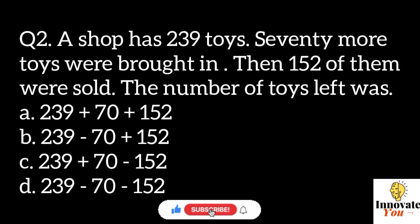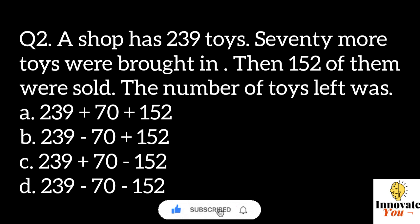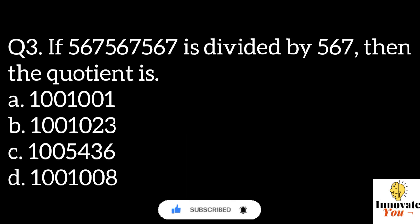Question 2. A shop has 239 toys. 70 more toys were brought in, then 152 of them were sold. The number of toys left was: A. 239 plus 70 plus 152. B. 239 minus 70 plus 152. C. 239 plus 70 minus 152. D. 239 minus 70 minus 152. Answer C: 239 plus 70 minus 152.